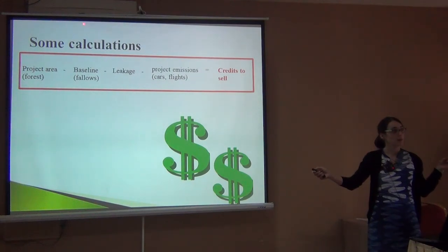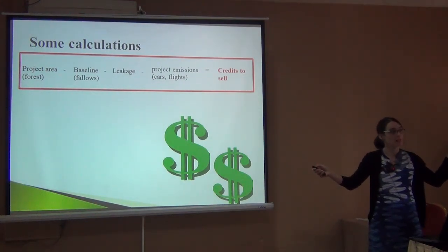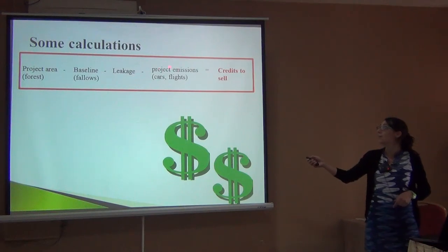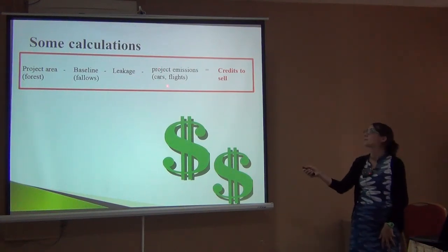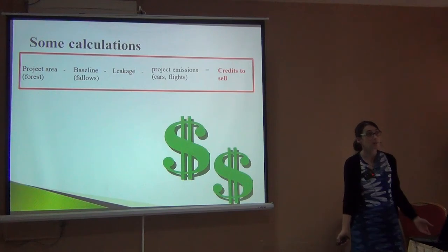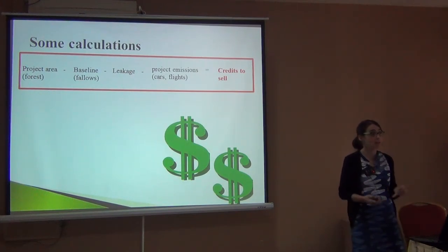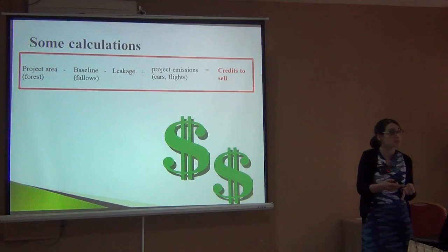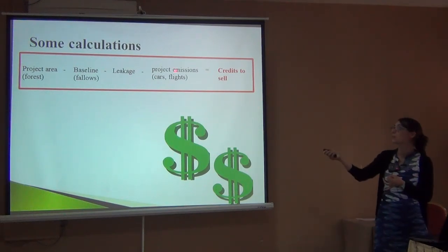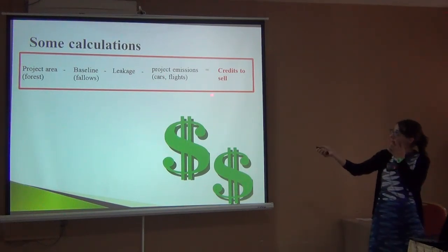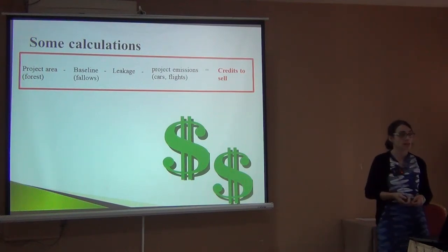We need to remove how much the displaced people are going to farm and deforest elsewhere, and also how much the project costs. Running a project also creates CO2 — the cars moving around, the consultants flying in from other countries. This is something that also needs to be computed. When we make all these adjustments, this is the real amount of credits that we can sell.